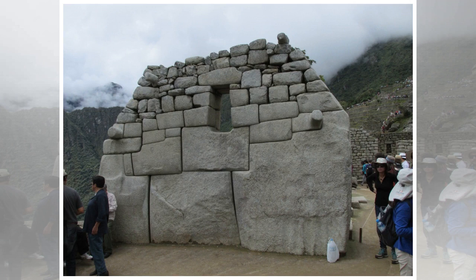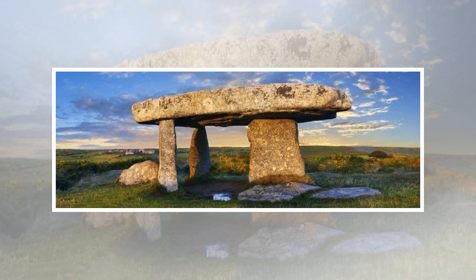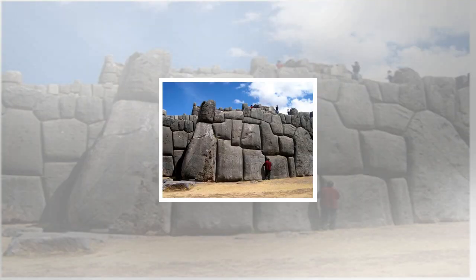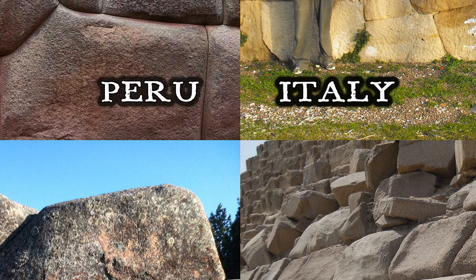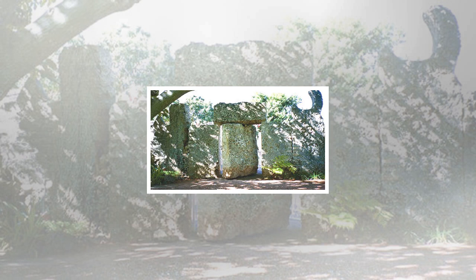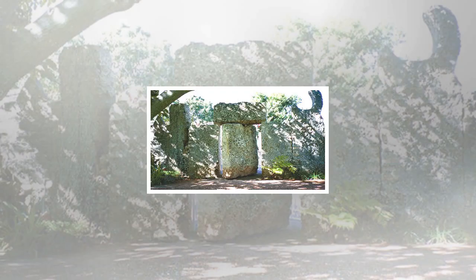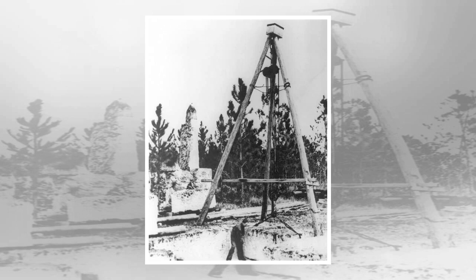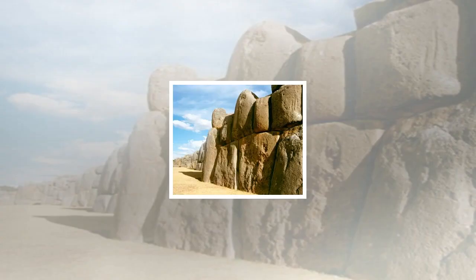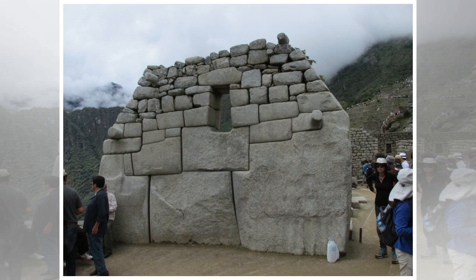Coral Castle was built in the early part of the 20th century by Edward Leedskalnin. Ed was a stonemason who weighed 100 pounds and stood just over five feet tall. He worked alone under cover of darkness using lantern light to assure he would not be seen. He used only hand tools and a simple hoist. The average weight of his blocks of coral stone is 12,000 pounds — compared to 5,000 pounds for the average casing block of the Great Pyramid. Ed did not own an automobile, and there was no wired electricity at Coral Castle. He claimed: 'I have discovered the secrets of the pyramids, and have found out how the Egyptians and the ancient builders in Peru, Yucatan, and Asia, with only primitive tools, raised and set in place blocks of stone weighing many tons.'